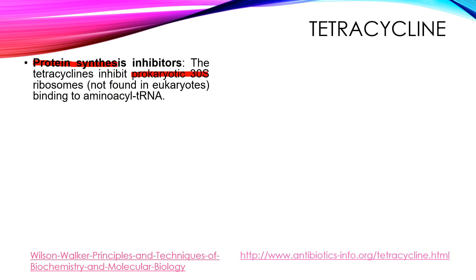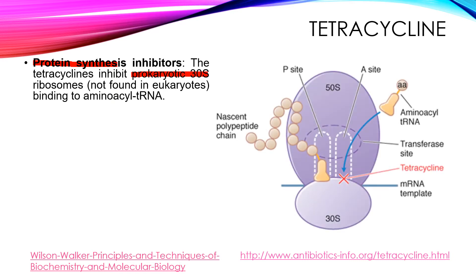As you can see in this image, tetracycline binds here and blocks this site for the incoming tRNA. Remember, tetracycline does not affect eukaryotes because we people have a 40S ribosome subunit instead of 30S.